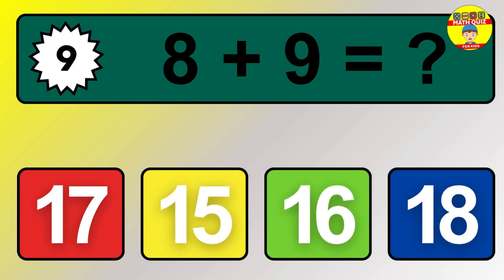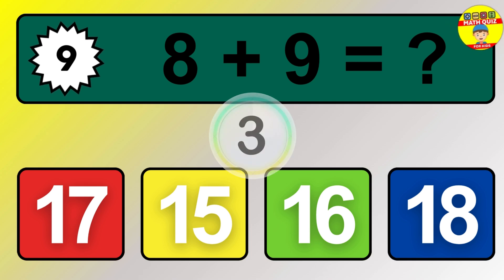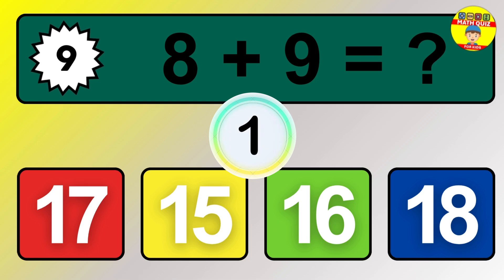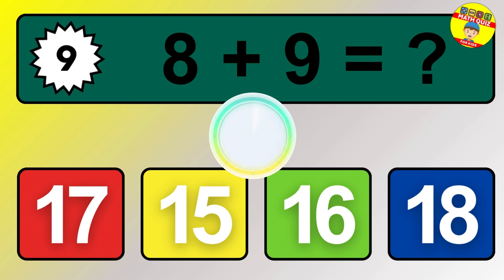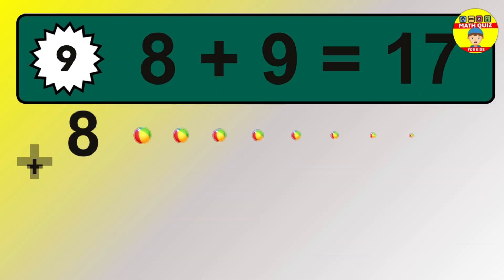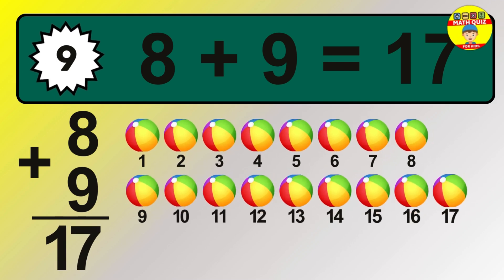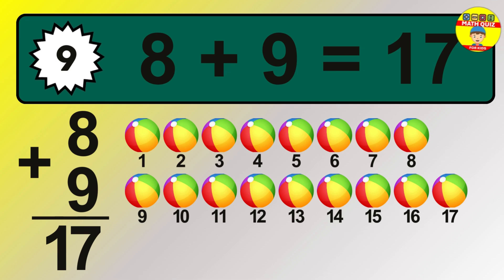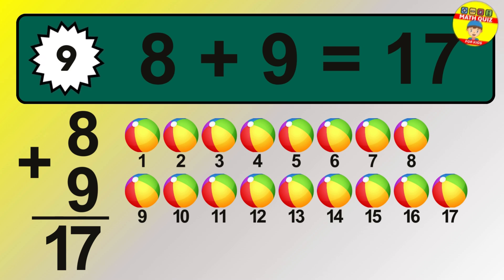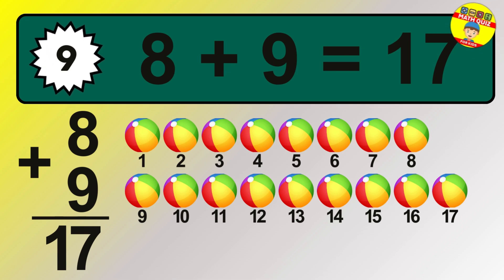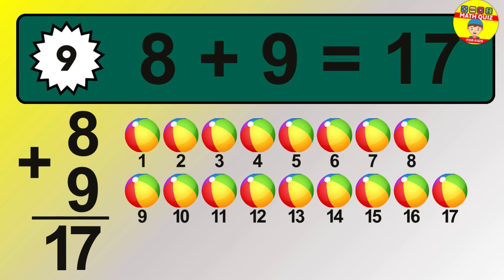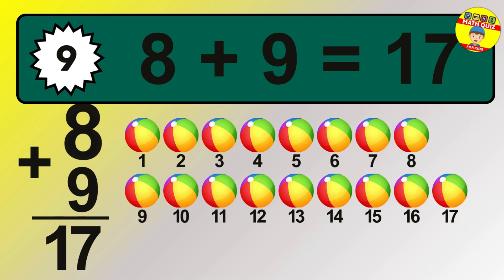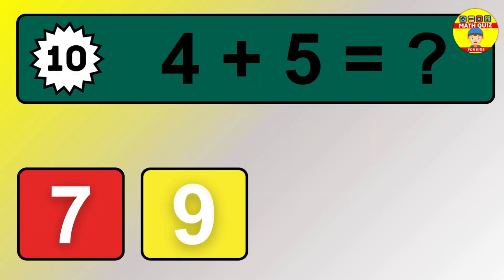Question 9. 8 plus 9 equals what? So the answer is 8 plus 9 is 17. Let's count it. 1, 2, 3, 4, 5, 6, 7, 8, 9, 10, 11, 12, 13, 14, 15, 16, 17.